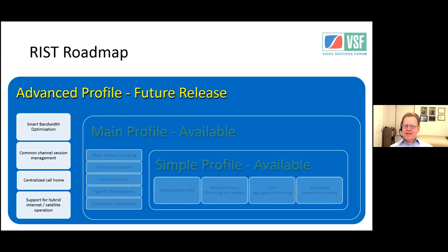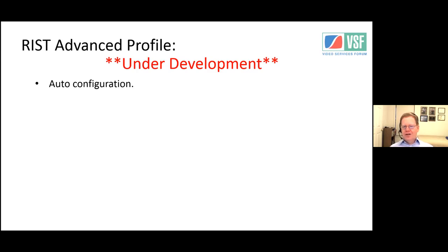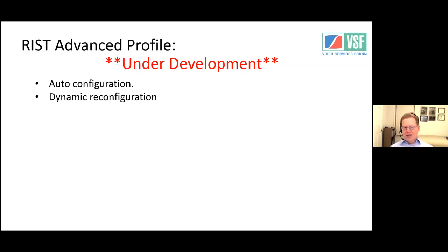Now the advanced profile — this is a future release, currently under development, and some things are subject to change. Features under development include auto configuration or plug-and-play, so you can connect up and let it do the negotiations and configure your signal. Currently you have to know many parameters to make it work. This makes it easier for people in the field — shooters more knowledgeable in framing a shot than in transmission technology. Dynamic reconfiguration will automatically adjust to changes in data rates or internet conditions in real time.